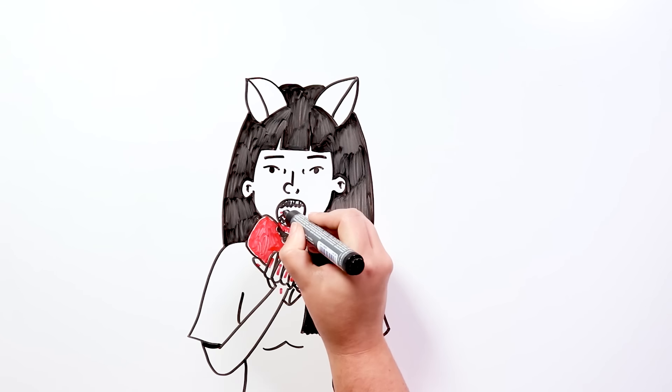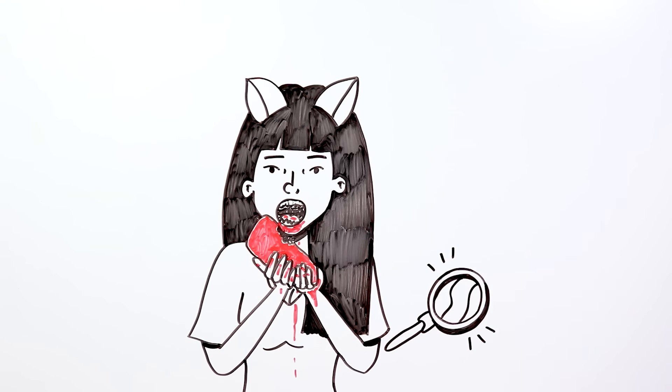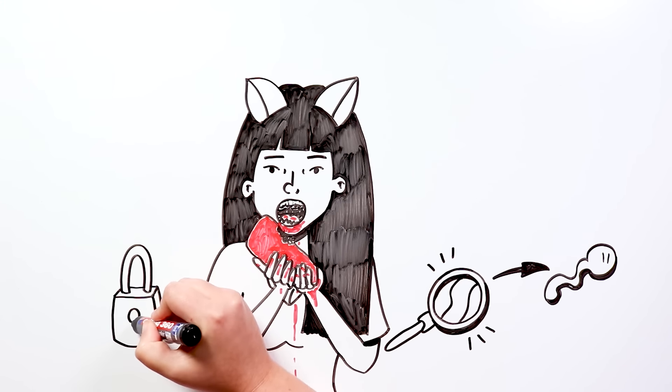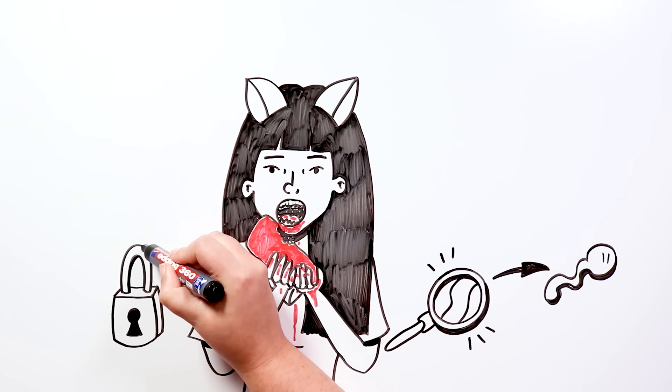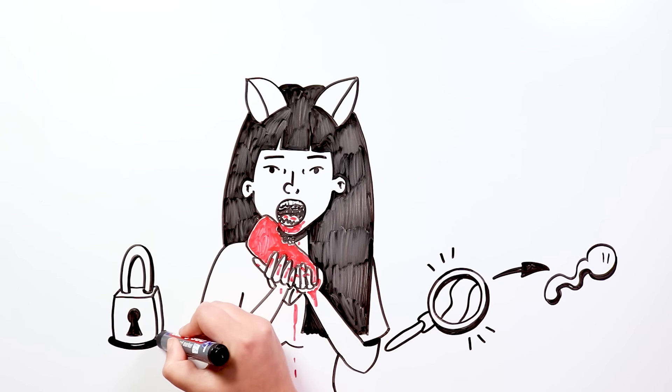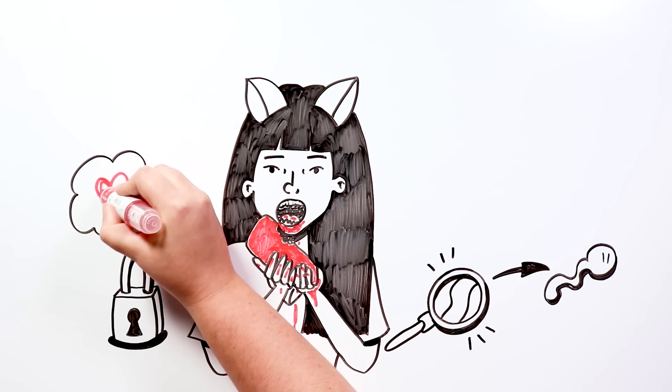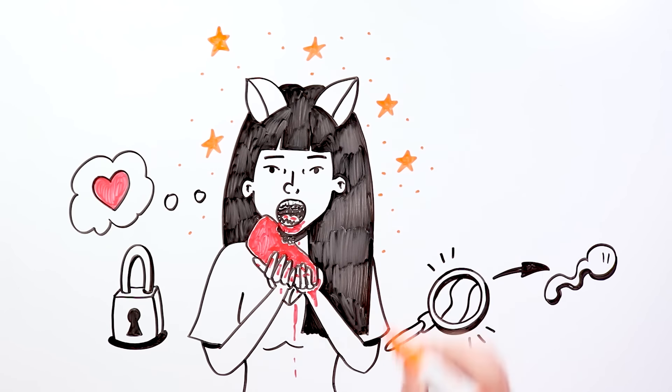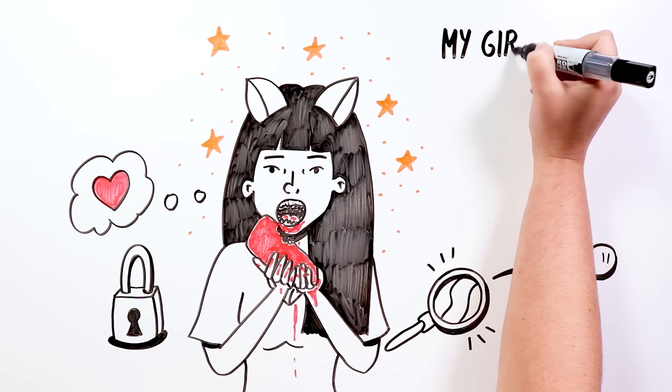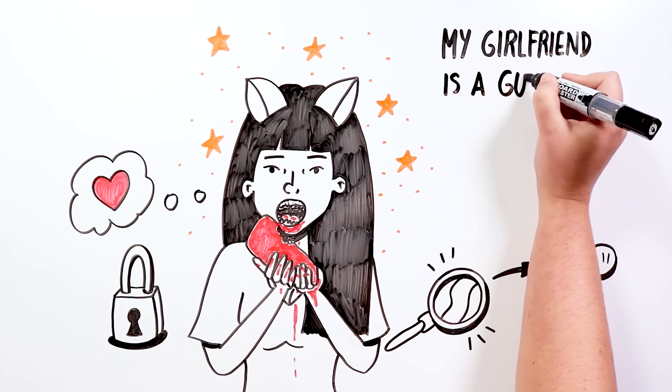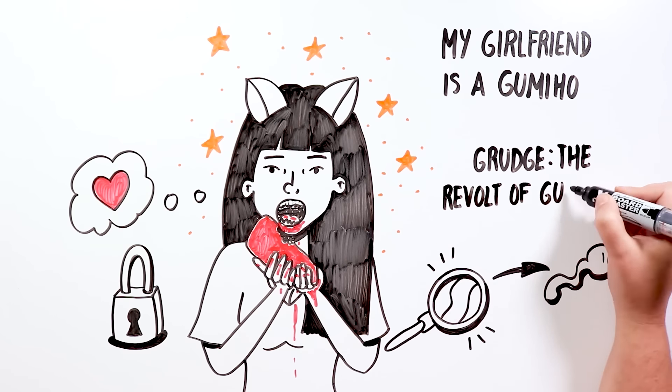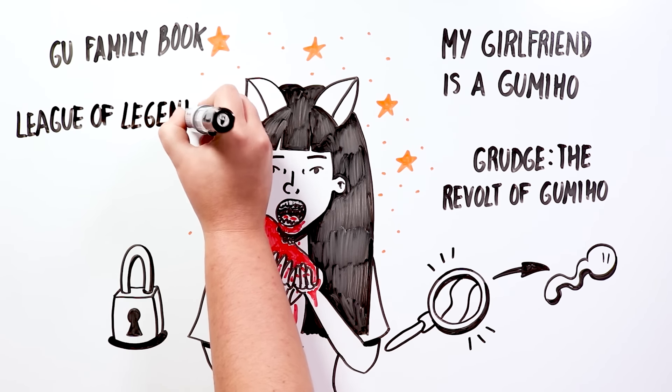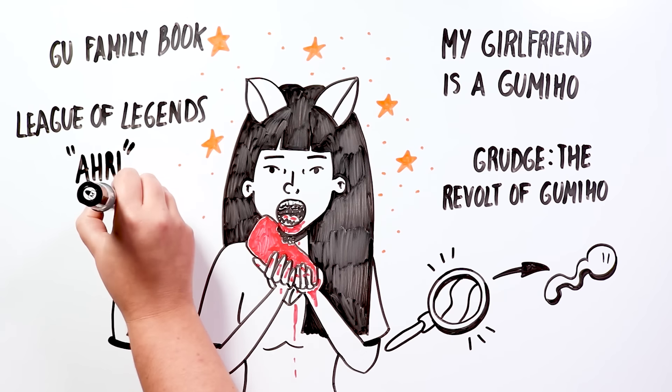There are different versions of that legend, but all agree that if the Kumijo nature of the fox is discovered by humans, it means the end of their lives. Sometimes, they can make deals, and if the human who discovered the Kumijo keeps the secret for a specific time, he can keep the human form. This is what he desires most – to become a person. Over time, their representation in the world of culture has grown. We have been able to find nine-tailed foxes in K-dramas such as My Girlfriend is a Kumijo, Grudge the Revolt of Kumijo, and Goo Family Book. In a multitude of books, and even in video games such as League of Legends, with the character of Ari, inspired by this figure.